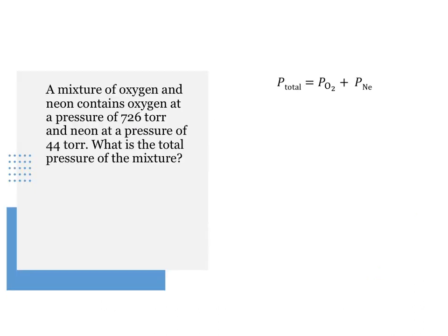Let's work an example together. A mixture of gases contains oxygen at a pressure of 726 torr and neon at a pressure of 44 torr. What is the total pressure of the mixture?